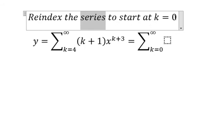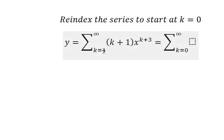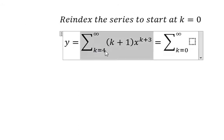We know that at the beginning we have k equals four, so k plus one gives us five, and k plus three gives us seven at the beginning.